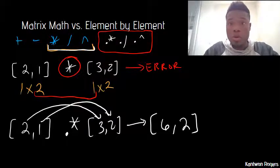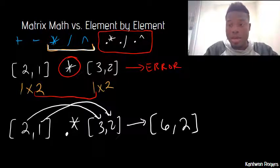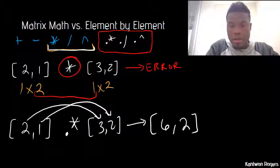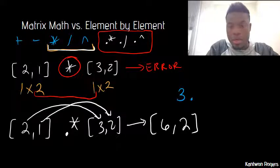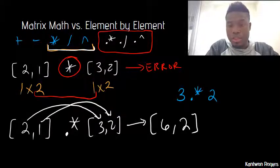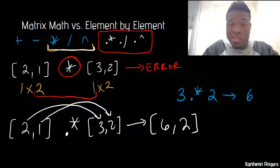This works for just regular doubles as well. If I try to do, let's say, three dot multiply two, this is valid, and I'll just get back six.